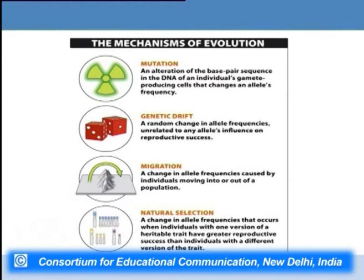The fourth and very important process is natural selection — a guiding force which acts upon mutations produced in any population and brings about change in allelic frequency by selecting only those alleles which provide some benefit to the organism. Those alleles that impart greater reproductive success or greater adaptability are selected and passed from one generation to the next. These are the four methods: migration, genetic drift, mutation, and natural selection.